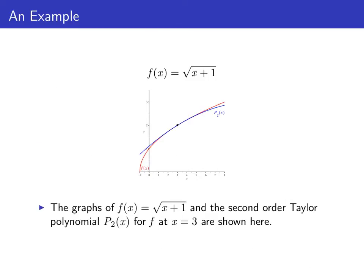Here's the graph of p sub two of x against f of x. As long as we stay close to x equals three, the second order Taylor polynomial more closely fits the graph of f of x than did the first order Taylor polynomial centered at x equals three.